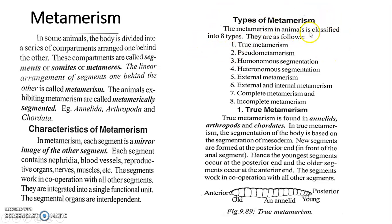Metamerism in animals is classified into eight types: true metamerism, pseudo metamerism, homonomous segmentation, heteronomous segmentation, external metamerism, external and internal metamerism, complete metamerism, and incomplete metamerism.